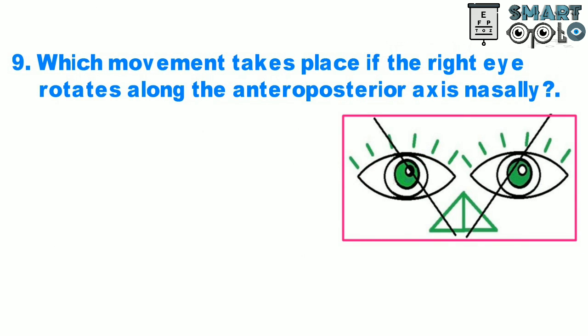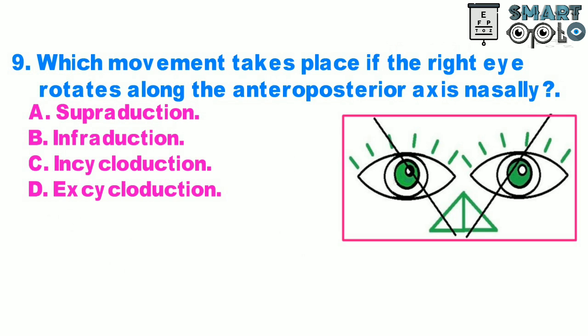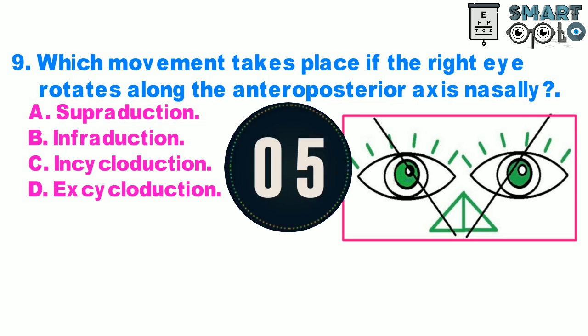Question 9. Which movement takes place if the right eye rotates along the anterior-posterior axis nasally? A. Supraduction, B. Infraduction, C. Incycloduction, D. Excycloduction.